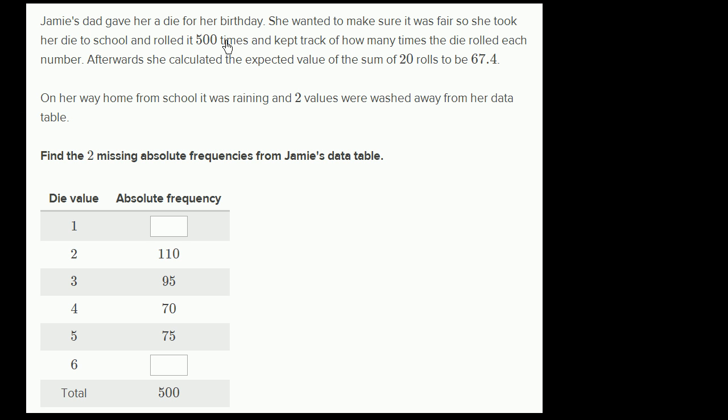Jamie's dad gave her a die for her birthday. She wanted to make sure it was fair, so she took her die to school and rolled it 500 times and kept track of how many times the die rolled each number. Afterwards, she calculated the expected value of the sum of 20 rolls to be 67.4.